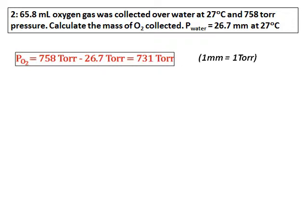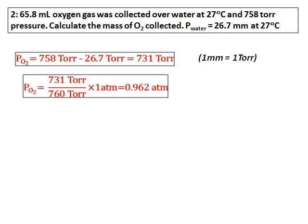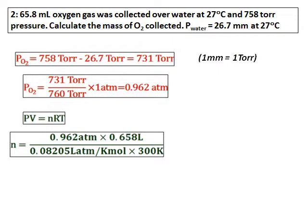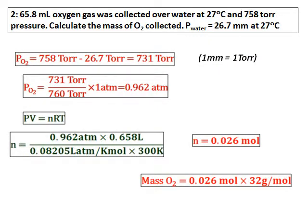Since the volume is in milliliters and liters, I will convert the pressure of oxygen to atmospheres by dividing by 760 Torr. Once I have the pressure in atmospheres, I use PV = nRT, where n is what we need to calculate. Volume is given — convert to liters; R is known; convert temperature to Kelvin. Calculate n, then using the molar mass of oxygen, calculate the mass of oxygen.